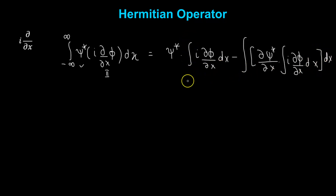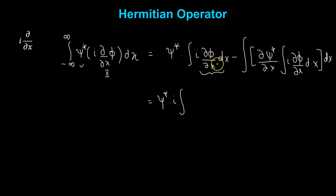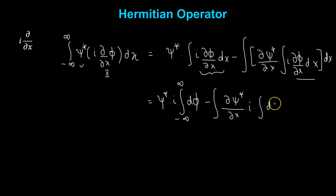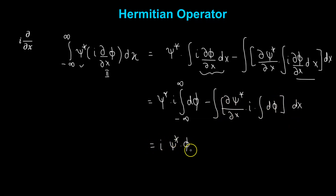All limits go from negative infinity to positive infinity. Since i is a constant, we can pull it out of the integration. So as per the definition, the integral of partial of phi with respect to x dx becomes simply d-phi. This gives us i times psi-star times phi, with limits going from negative infinity to positive infinity.